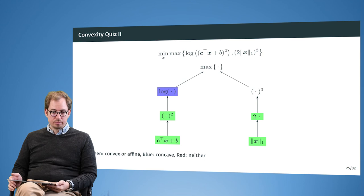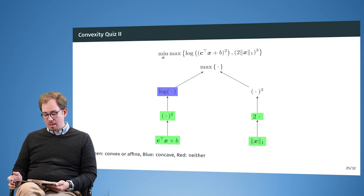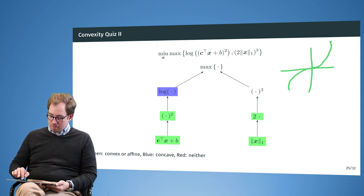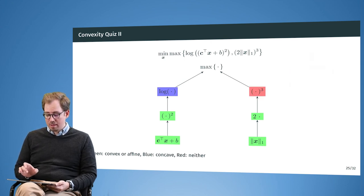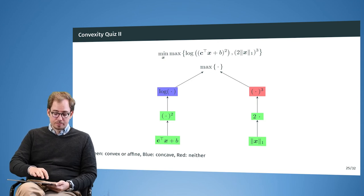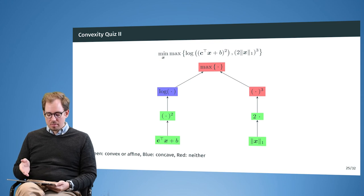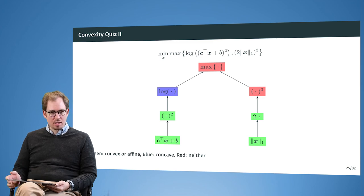Multiplying the L1 norm by two is still convex, but then raising it to the third power is neither convex nor concave — the cubic function has both convex and concave regions. We cannot recover from this: taking the maximum of a concave input and a neither-convex-nor-concave input means we cannot determine convexity from the composition rules. The end result is neither convex nor concave.